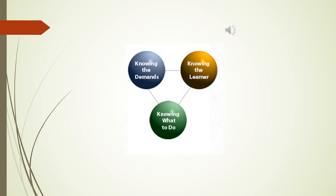At this stage we've covered two or three corners of our triangle. We started off by looking at the numeracy demands of a particular task and using the learning progressions to unpack and understand those demands. Secondly, we've focused on the learner and, through ALNET and other formative assessments, we should have a clear picture of what level the learner is working at. For many learners there's going to be a clear gap between where they are and the demands of what you're asking them to do. So we will then need to go to the third corner of our triangle — knowing what to do. Thank you very much.